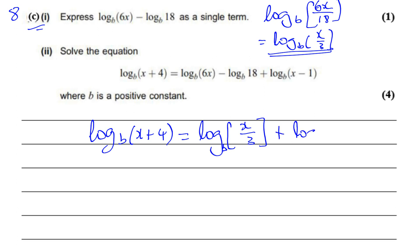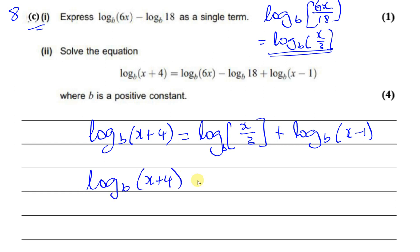Plus log to the base b of (x - 1). And these two can be written as a product because it's addition, so I can write this as x times (x - 1) over 3. So we have log to the base b of (x + 4) equals log to the base b of x times (x - 1) over 3.